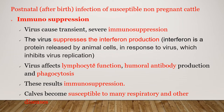Another reason for immunosuppression: the virus affects lymphocyte function, it affects humoral antibody production, and it affects phagocytosis. These are the reasons that cause immunosuppression. Because of this immunosuppression, calves become susceptible to many respiratory and other diseases. So BVD, because of immunosuppression, invites other diseases also due to decreased immunity.